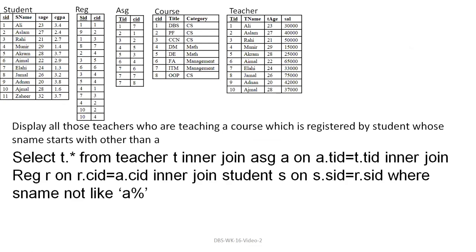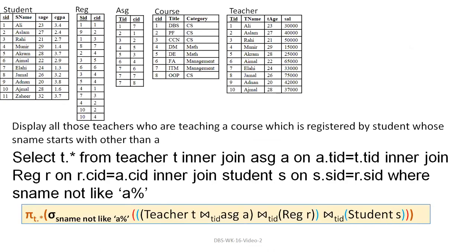This query does not work easily — let's see how much time it takes to execute. Its SQL query's relational algebra will involve a join on TID between Teacher and ASG, then the result is joined with the Reg relation, sigma (selection) is applied on top, and then projection is applied.